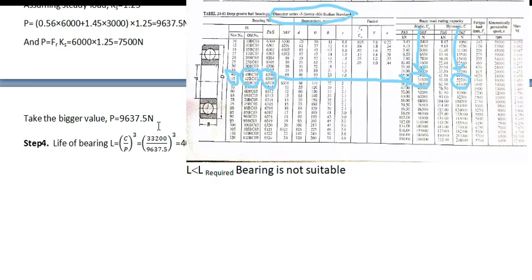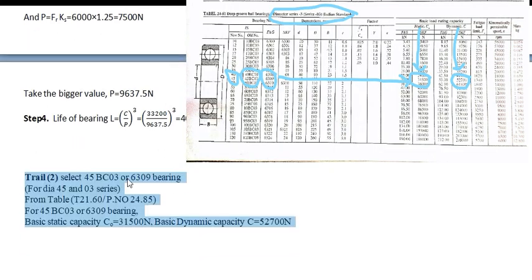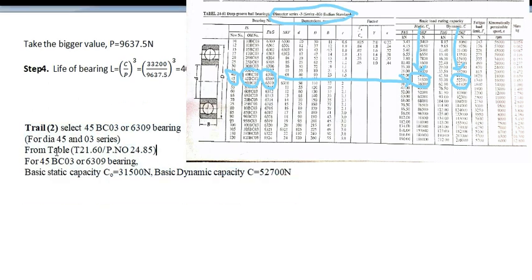Again, you have to go for trial 2. In the trial 2, you have to select the 03 series, 45BC03 series. Here, again you have to refer the table 21.60 page number 24.85. Here you have to find out the static capacity and dynamic capacity from the data handbook.